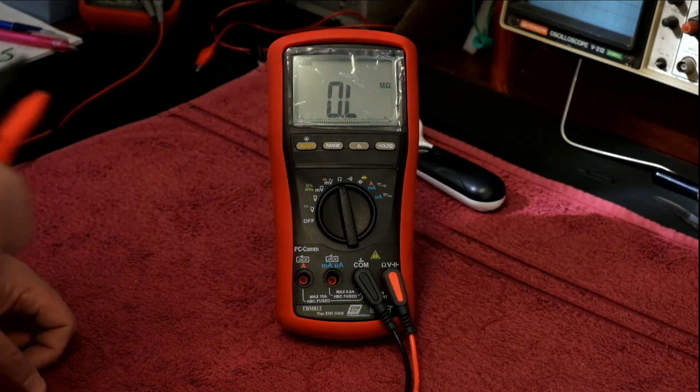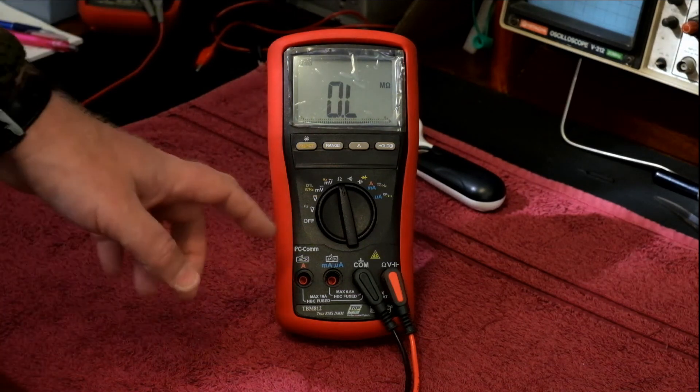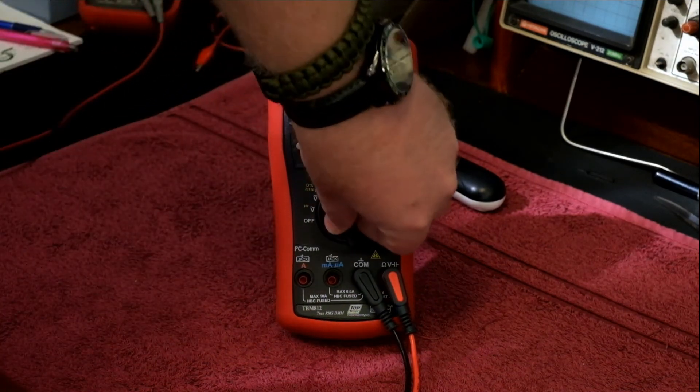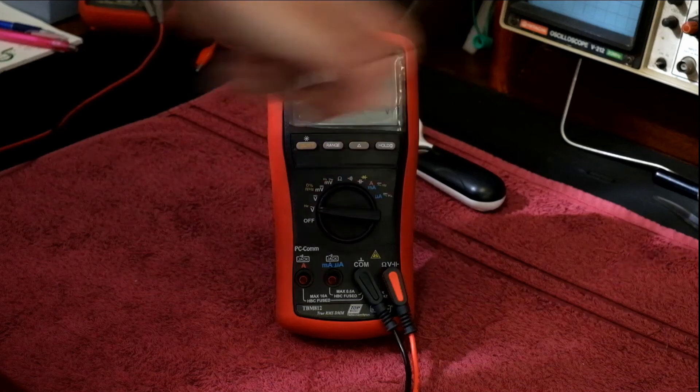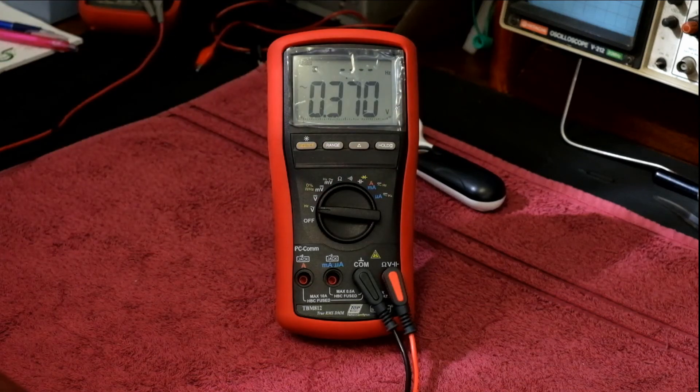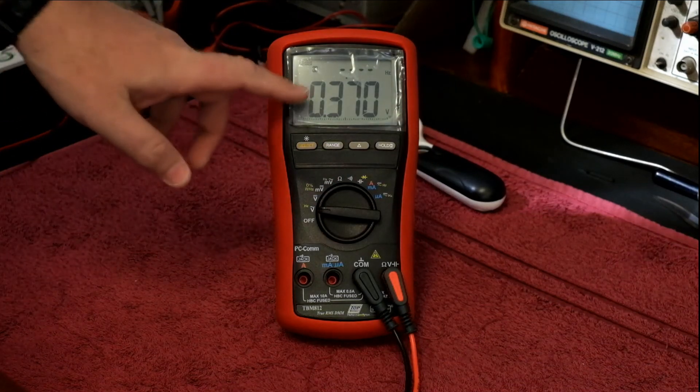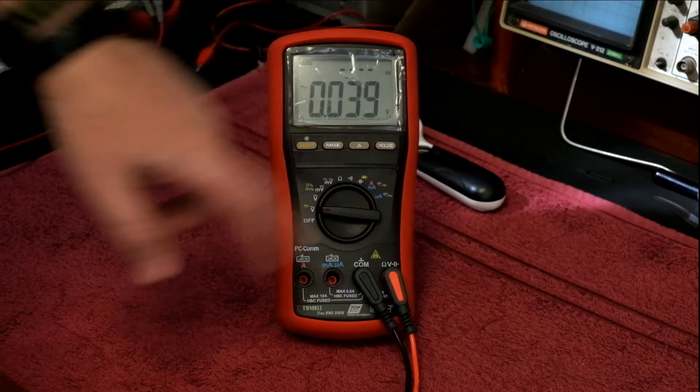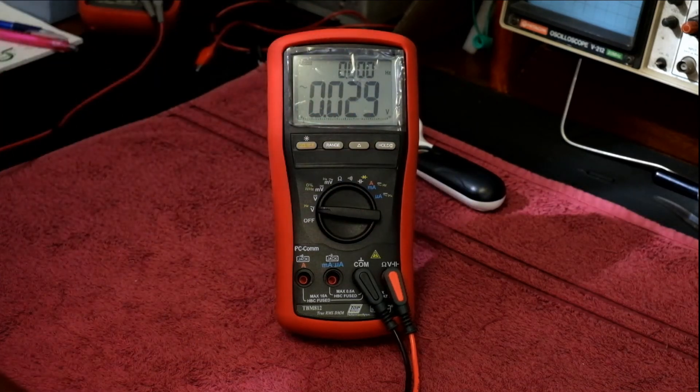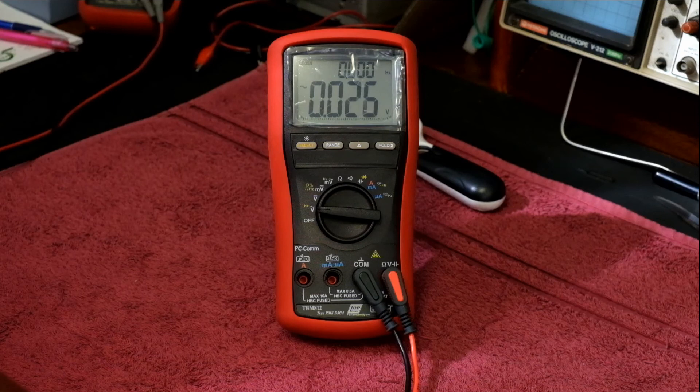This one does have a few advantages such as being able to read the frequency of the AC that you are measuring. So if we go across to AC volts and we do an AC measurement, it is going to measure the voltage and it is going to give you the frequency of that voltage, which is brilliant.